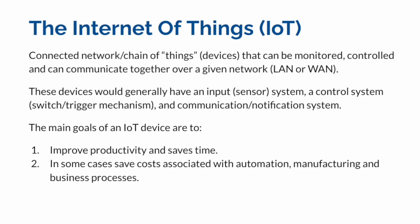So what is the Internet of Things? The Internet of Things is generally a network — a chain of devices — that can be monitored, controlled, and managed over long distances, sometimes over the network. These devices can communicate together, whether over LAN, Wi-Fi, Bluetooth, or whatever mode of communication you have.